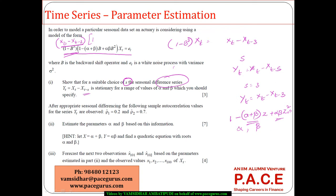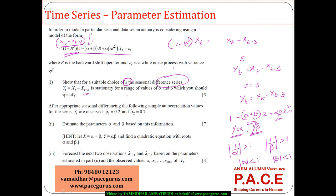Or equivalently, the roots are 1/alpha and 1/beta. The sum of roots is alpha plus beta, and the product is alpha*beta. For the series to be stationary, the absolute values of the roots must be greater than 1, which means the modulus of alpha and beta both should be less than 1.